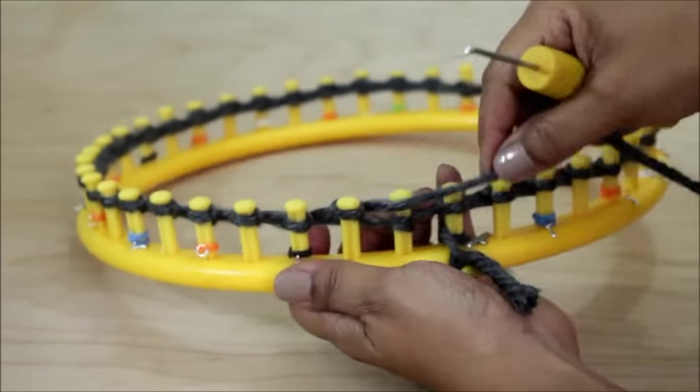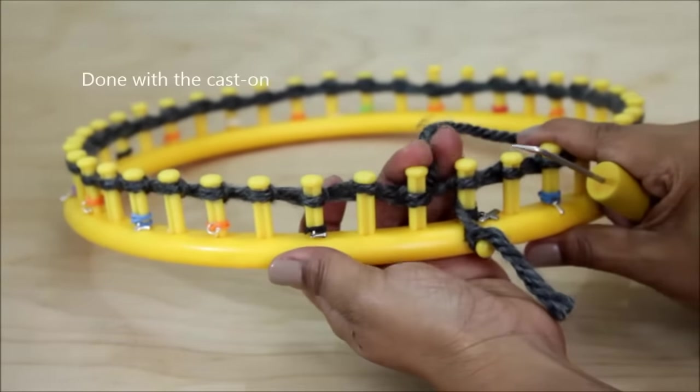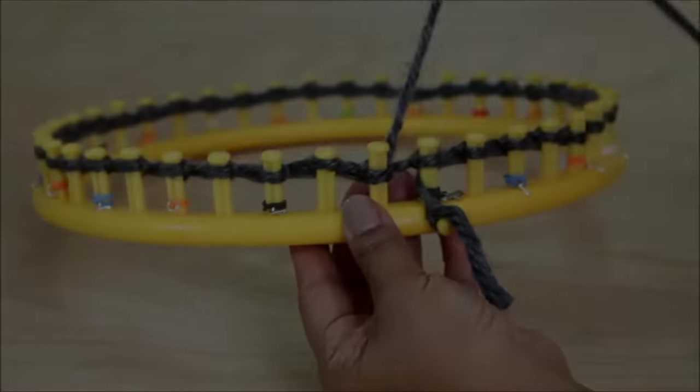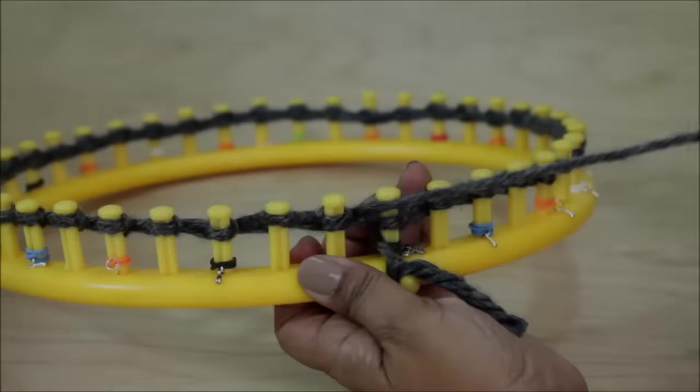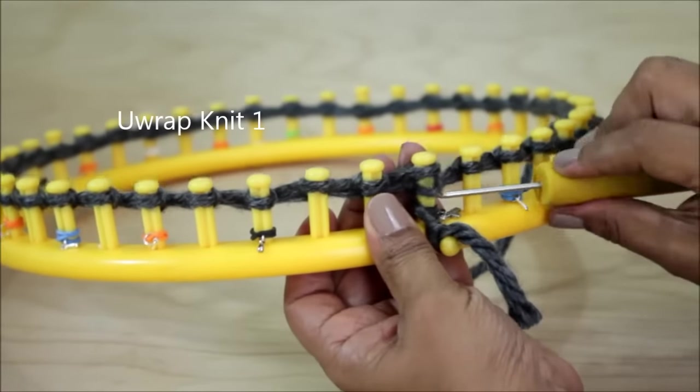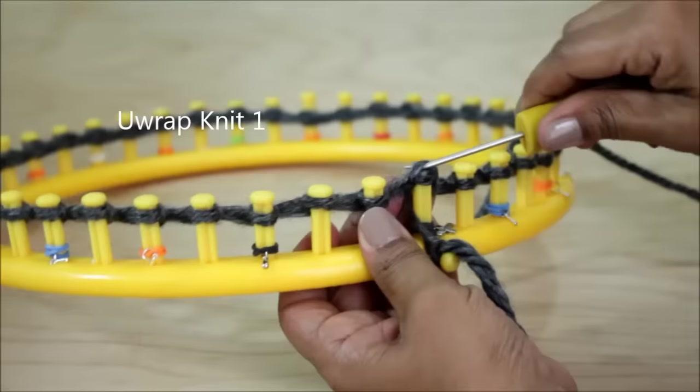When you finish knitting all of your pegs you're then done with the cast on and you're ready for row one where we're going to do a knit one, purl one pattern. Again we're using the U-wrap version of the knit stitch so we half wrap and knit off.